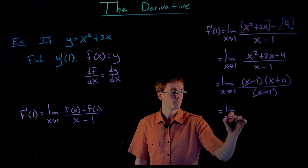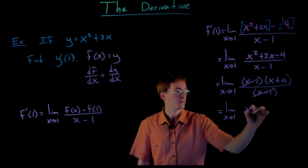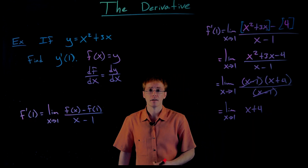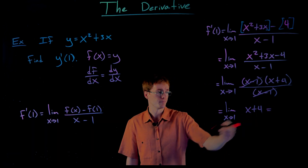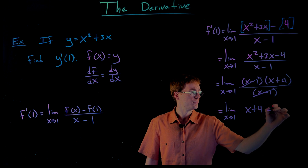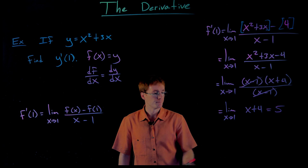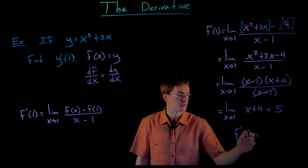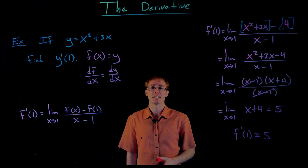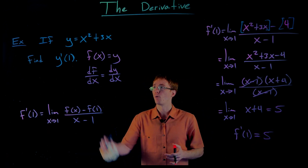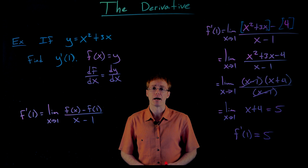This gives us an equivalent limit: the limit as x approaches 1 of just x plus 4. This is a limit of a simple polynomial, so we can evaluate it using direct substitution. Plugging in x equals 1 gives 1 plus 4 equals 5. So y prime of 1, or f prime of 1, is 5. That is the slope of the tangent line to this function at x equals 1, describing the instantaneous rate of change of our function at that point.